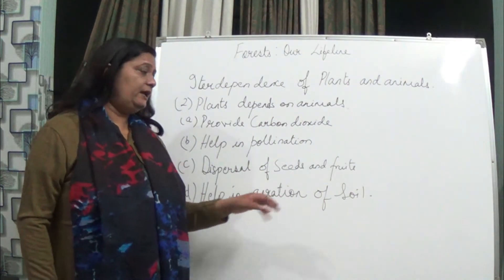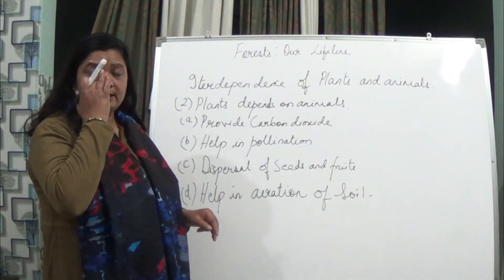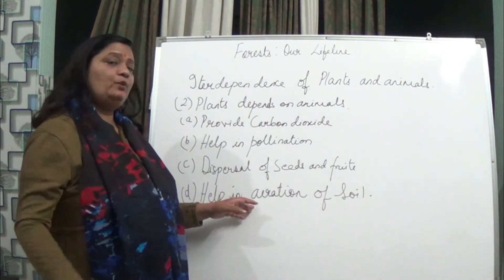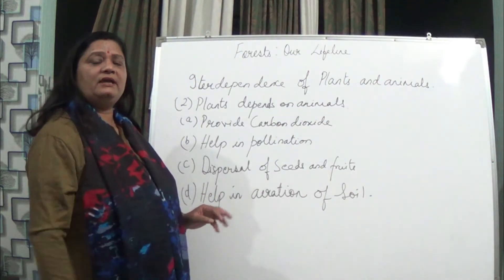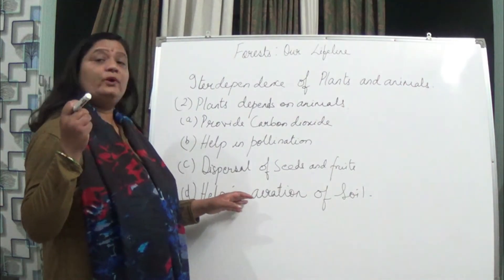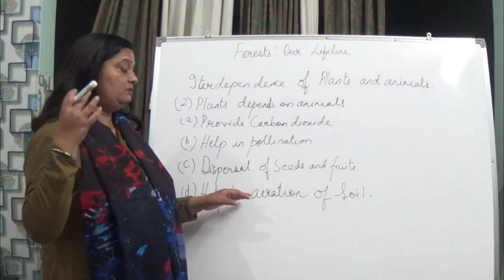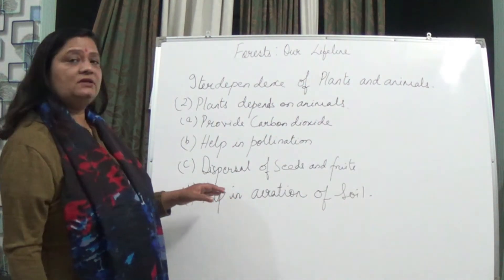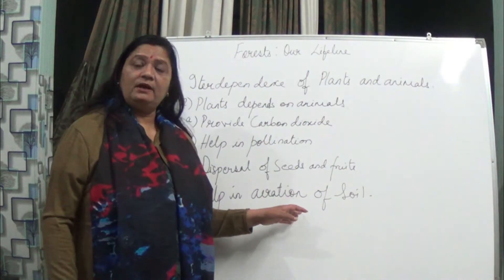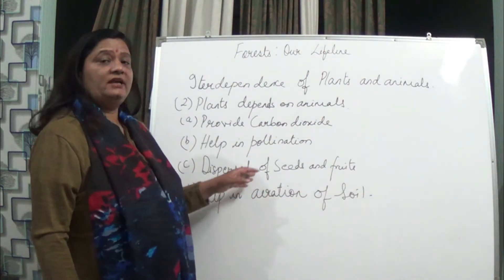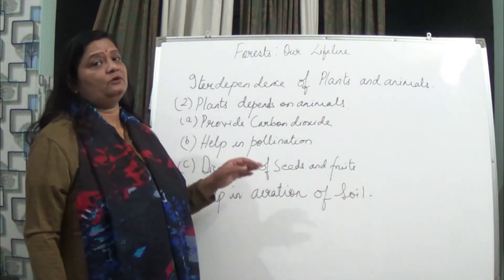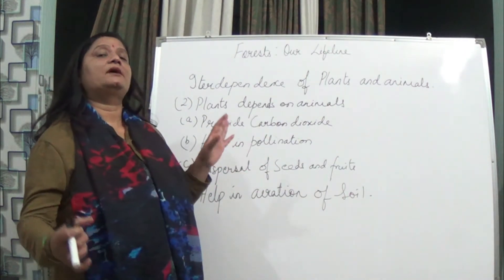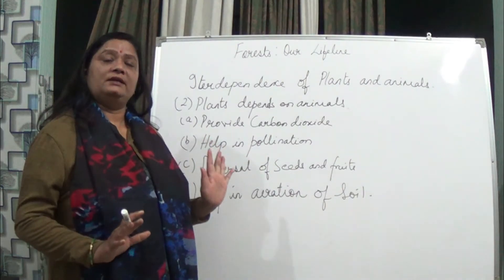Animals also help in aeration of the soil. Animals like earthworms dwell inside the soil, making the soil quite aerated — it makes the soil loose. As a result, aeration in soil becomes proper, plants can grow more properly, and water can seep inside the soil very easily.